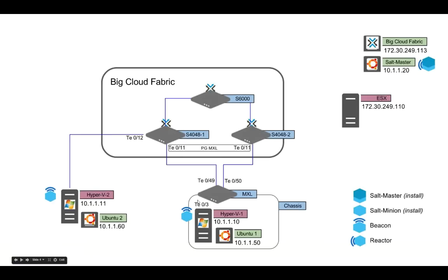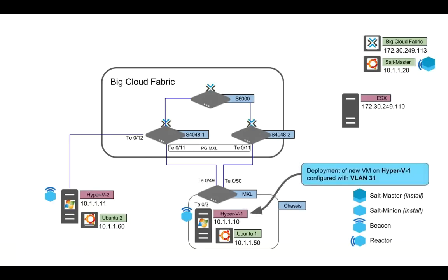Here's our architecture again. What we're going to show in this demo is a deployment of a new VM on Hyper-V — actually, the VMs are already deployed — but I'm going to go into Hyper-V and change the VLAN it's associated with to show that the VLAN modification can be observed. On the Hyper-V server, we have a beacon — a SaltStack beacon.